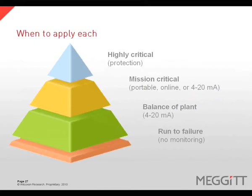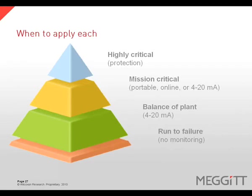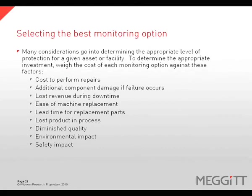A common question is: when do I apply each type of monitoring? The entire asset base can be thought of as a pyramid broken into four categories: highly critical equipment that requires protection; mission-critical equipment that can have a significant impact on the business if allowed to fail; balance of plant equipment, which is everything else worth monitoring; and run-to-failure equipment, which does not make financial sense to monitor. Many factors should go into this decision, including the cost to perform the repair, additional component damage if a failure occurs, lost revenue during downtime, ease of machine replacement, lead time for replacement parts, lost product in the process, diminished quality, environmental impact, and safety impact.